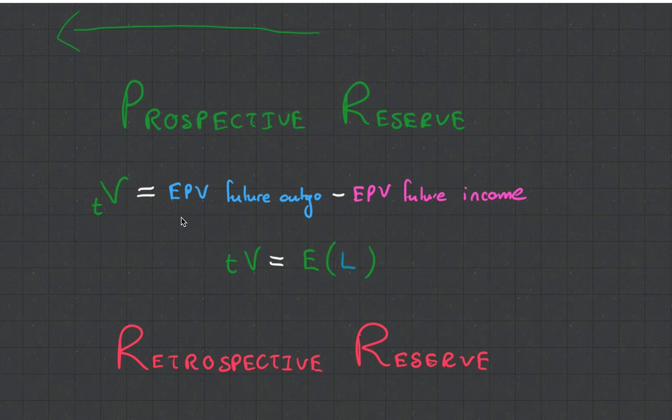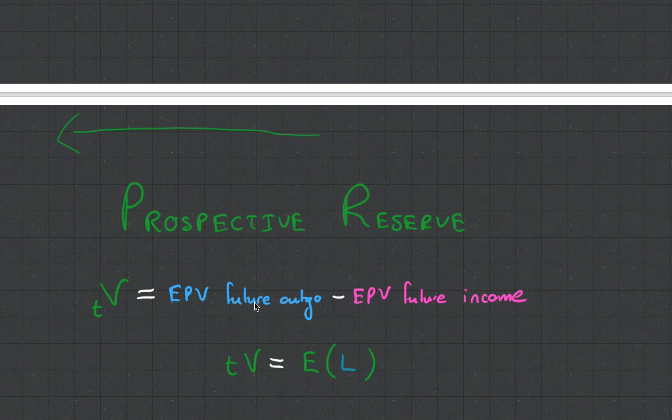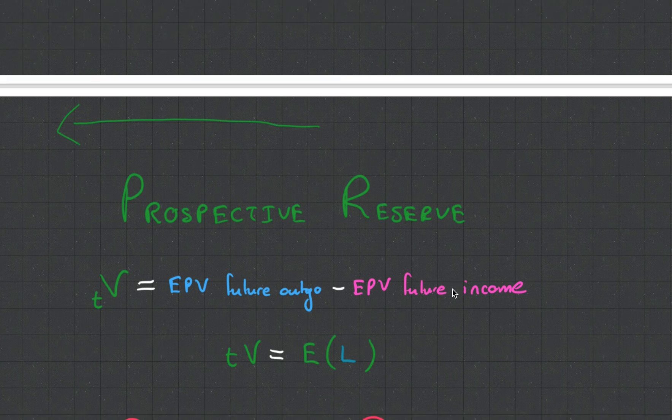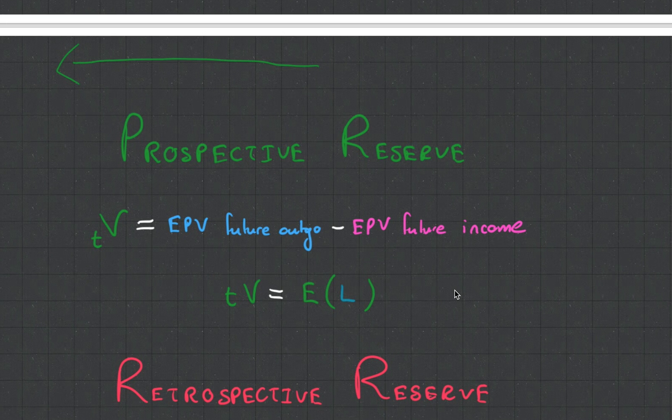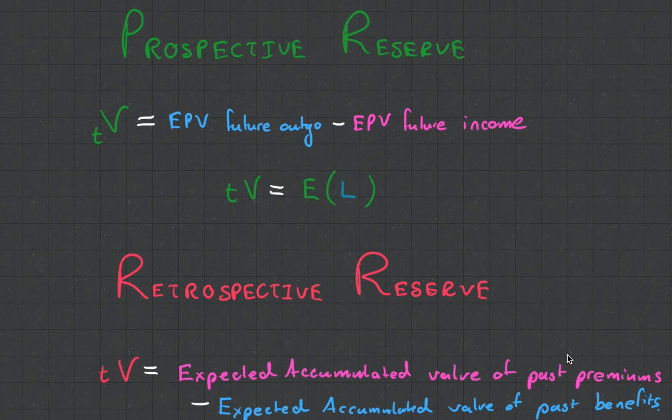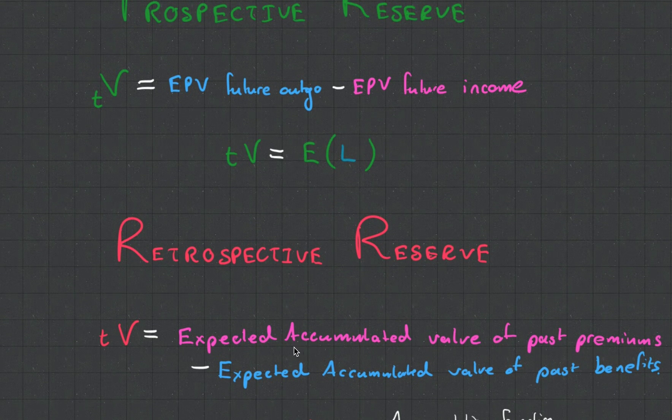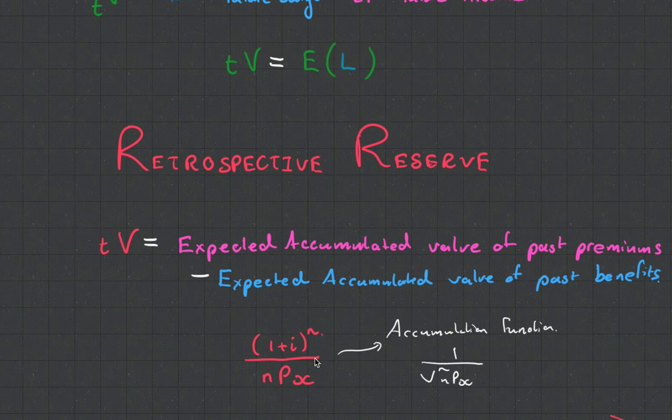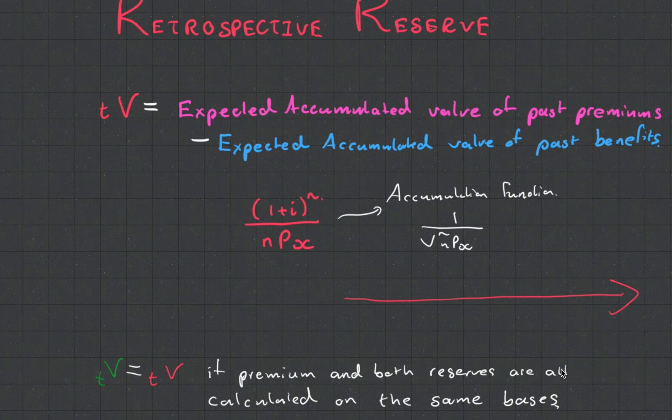The prospective reserve mathematically equals the expected present value of future outgo minus the expected present value of future income. Prospective reserves means you make a reserve looking forward, whereas retrospective reserve means you look at the past. Prospective reserve: future outgo minus future income. Retrospective reserve: expected accumulated value of past premiums minus expected accumulated value of past benefits - just an accumulation function, the inverse of what we spoke about in Chapter 4. These two reserves will be equal if calculated using the same assumptions.